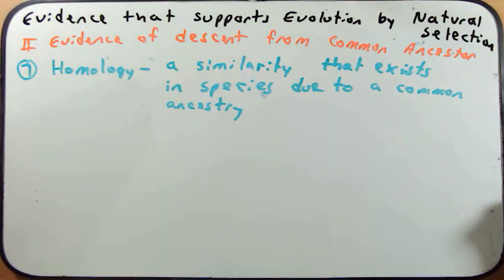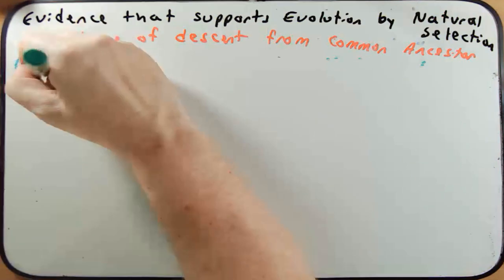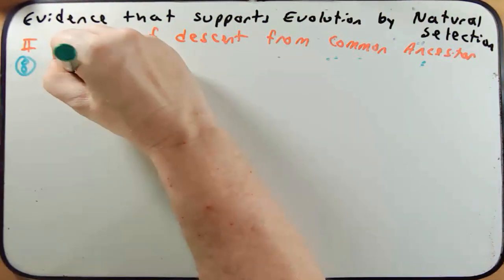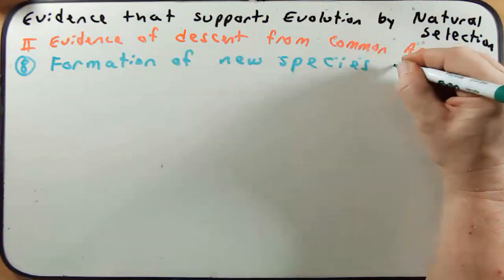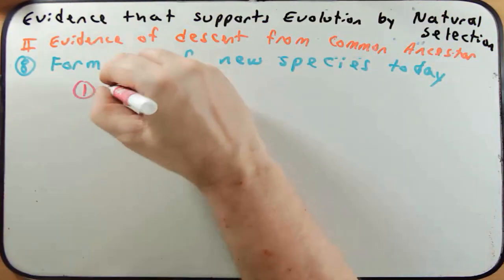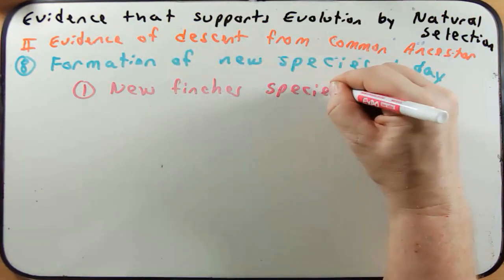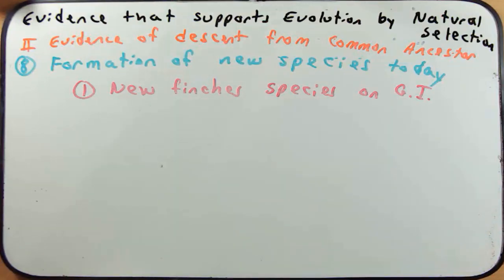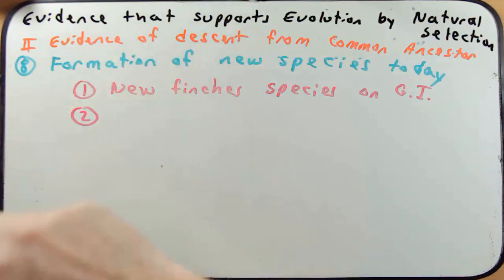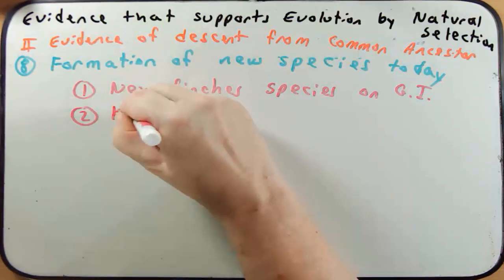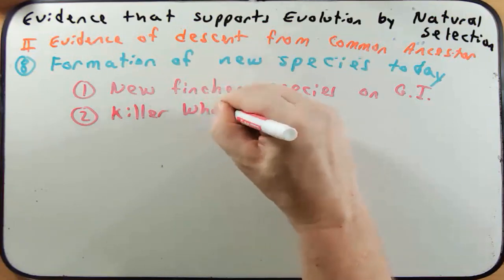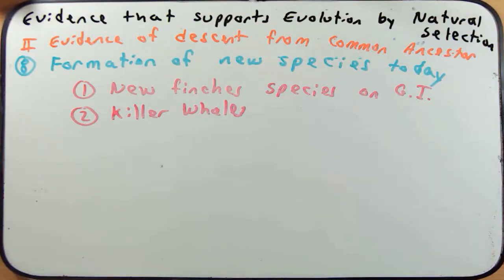The eighth and final piece of evidence is that we see the formation of new species today. Two good examples: we see new species of finch on the Galapagos Island due to changing environment and food availability. The other is that killer whales (orcas) have changed their prey choice and social behavior to such an extent that two populations of killer whales no longer interbreed.